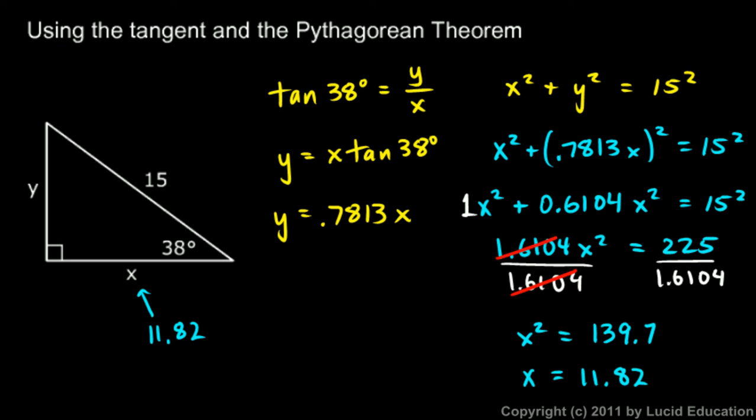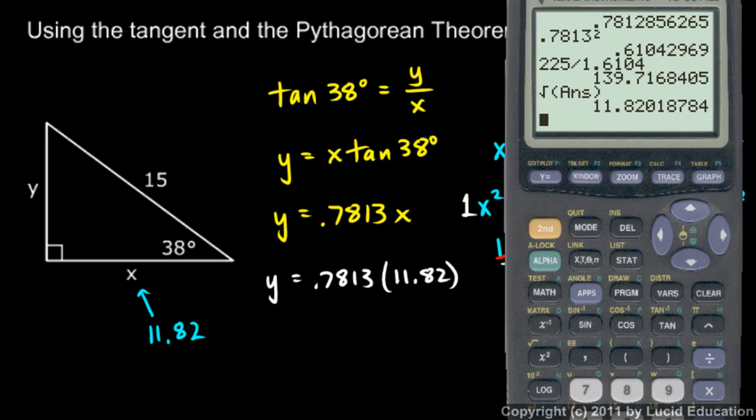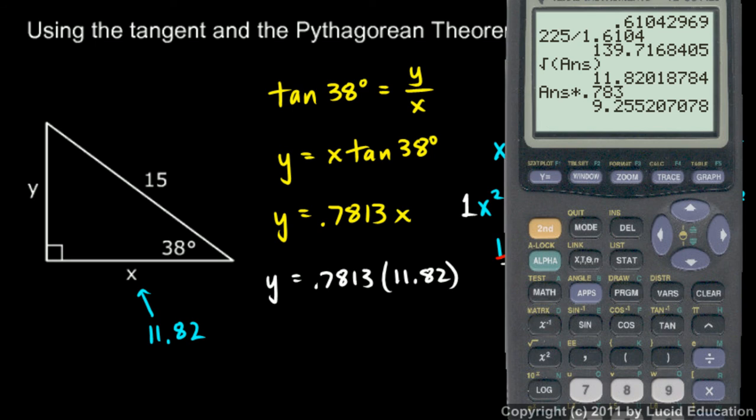And now that I know x, I can find y, and I'll use this equation to find y. y is just 0.7813 times 11.82, so I'll just keep my 11.82 that is in memory and I'll do that times 0.7813. I end up with 9.25, 9.26—actually I mistyped that. I put 0.783. I need to do 11.82 times 0.7813. That will be the correct answer, 9.23. That's what I want for y.